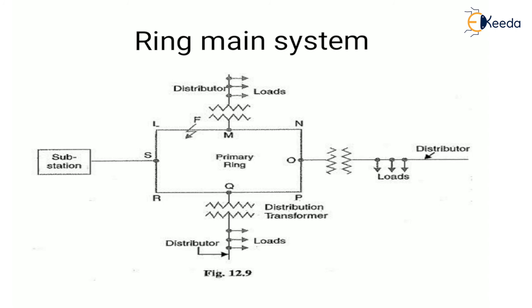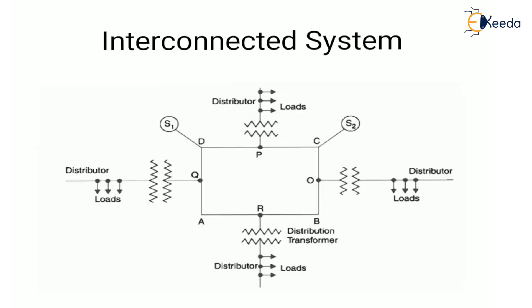The ring main system offers two advantages: less voltage fluctuation at consumer terminals, and reliability — if a fault occurs, continuity of supply can still be maintained through the other side. Next is the interconnected system — when the feeder ring is energized by two or more generator stations or substations, it is called the interconnected system. The distributors are connected to points O, P, Q, and R of the feeder ring through distribution transformers.